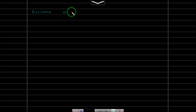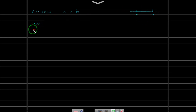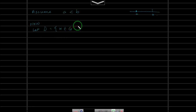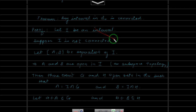Now define D = {x ∈ G : x ≤ b}. Recall that G is the open set in R_u such that A = I ∩ G. So D collects all elements of G that are less than or equal to b.